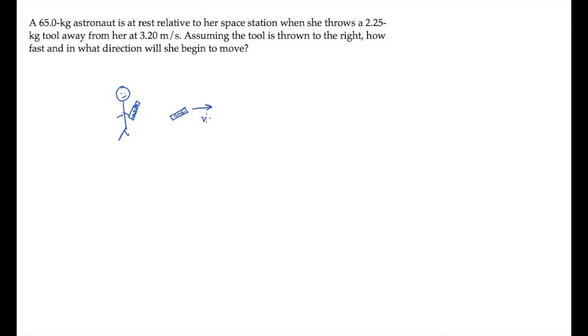We'll call it little v for the speed and little m for the mass. And we're asked to find her recoil speed. That's capital V. And we'll draw it to the left here and call her mass capital M.